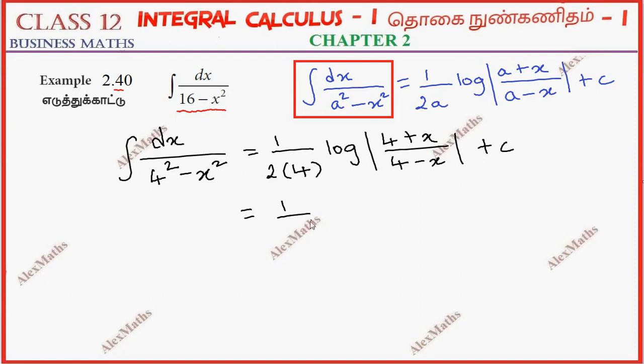The total answer is 1 by 8 log mod 4 plus x by 4 minus x plus c.